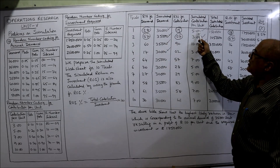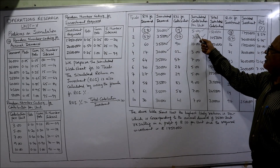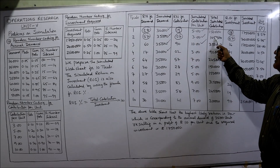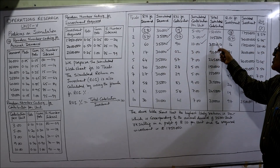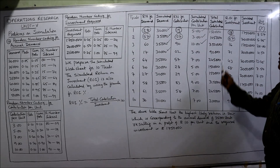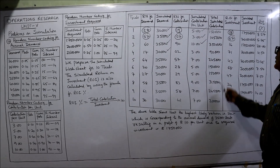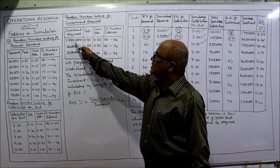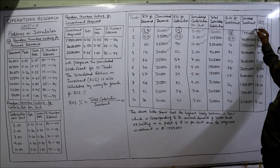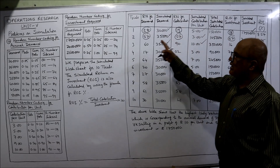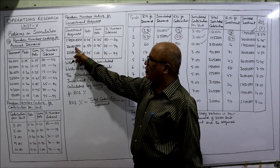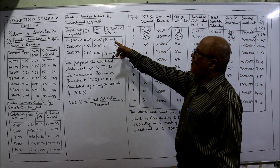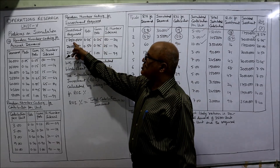Total contribution is calculated by multiplying simulated demand by contribution per unit. For example: 30,000 × 5 = 1 lakh 50,000; 35,000 × 3 = 1 lakh 5,000; 35,000 × 10 = 3 lakh 50,000. For investment: random number 18 falls in the first range (00–24), giving 17 lakh 50,000. Random number 67 falls in 25–74, giving 20 lakh. Random number 16 falls in 00–24, giving 17 lakh 50,000.